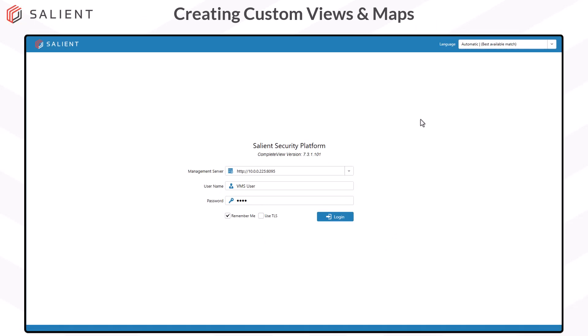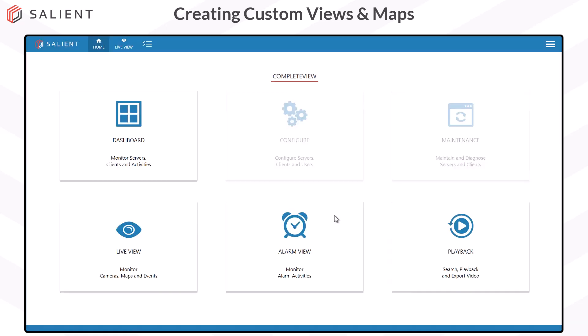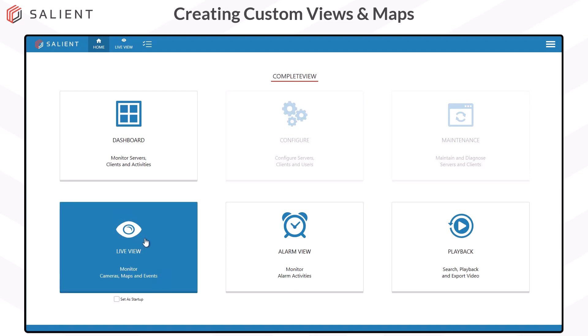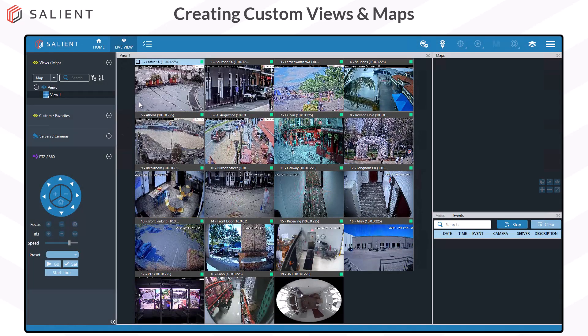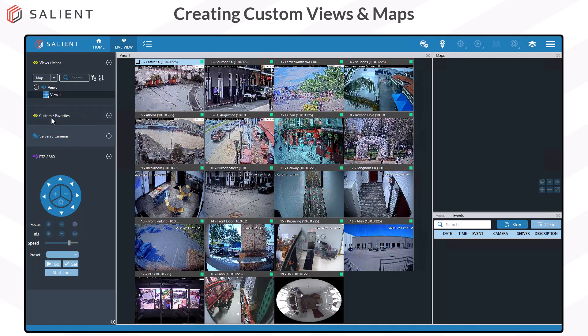Your first step will be logging into CompleteView with your desktop client. Once you've done that, to create your custom views and maps, you'll need to be in the live view module of CompleteView. Once there, in the left navigation panel, you'll see a custom and favorite section below your regular views and maps.